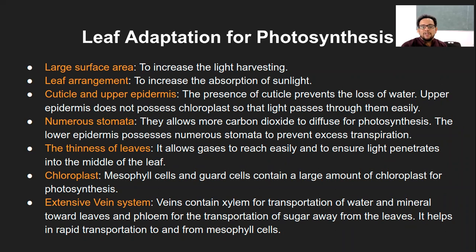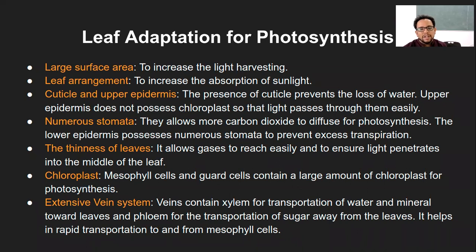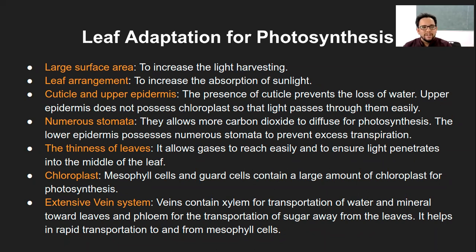Numerous stomata help more CO₂ to diffuse inside the leaf so photosynthesis happens to a greater extent, while also preventing excess transpiration so water is retained. The thinness of leaves allows gases to reach easily through different layers and ensures light penetrates to the middle portion of the leaf, where most chloroplasts are present.